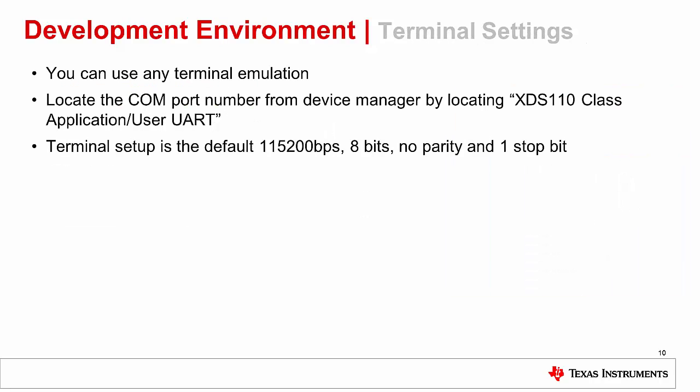Launch a serial connection application. We are using TerraTerm throughout this tutorial, but any terminal emulator can be used. Go to File, New Connection, select Serial, and select the port that says XDS110 class application/user UART, and click OK. Go to Setup Serial Port, change the baud rate to 115200, and keep the rest of the settings as shown.